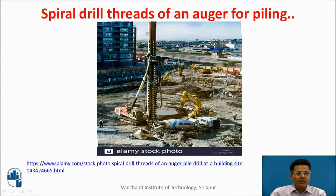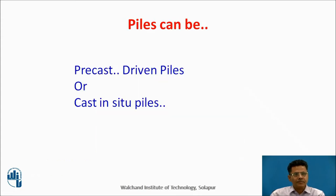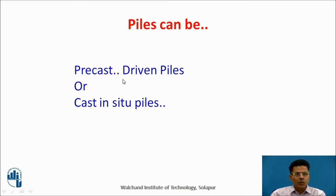This typical picture shows a spiral thread for an auger used for piling. By using the auger, we excavate the ground and make a vertical shaft for inserting a pile. Piles can be precast piles, driven piles, or cast in-situ piles.